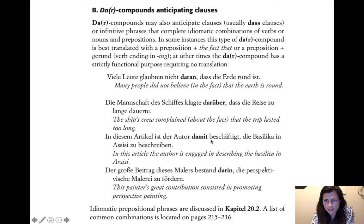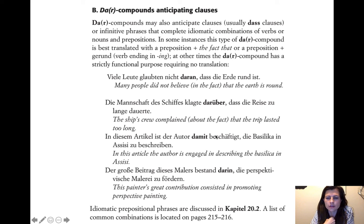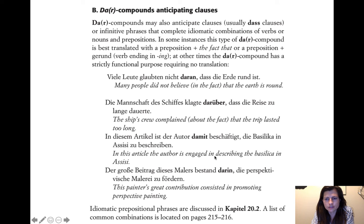'In diesem Artikel ist der Autor damit beschäftigt, die Basilika in Assisi zu beschreiben.' In this article the author is occupied with it — 'damit beschäftigt' — to describe the Basilika in Assisi. It really sounds clunky if you actually put 'with it' in there: 'The author is engaged in it to describe the Basilika in Assisi.' So you just take out the parts that make it clunky, and make sure all the meaning is still there.